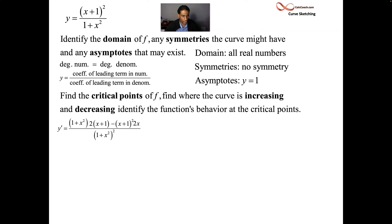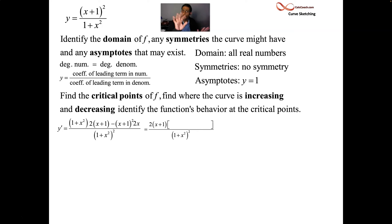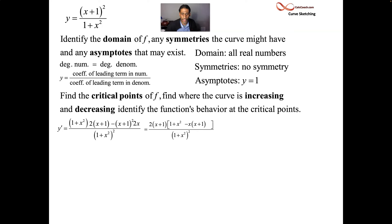Focus your attention on the numerator. Factor out anything the two terms might have in common — you see a 2 and an x plus 1. Take that out. What are you left with? A 1 plus x squared from the first term, and another x plus 1 term from the second, but there's a minus on that.